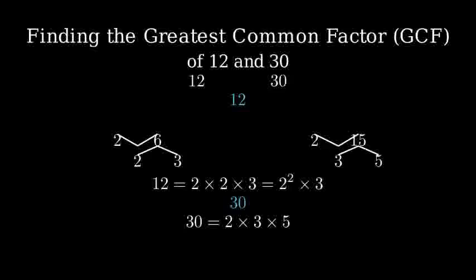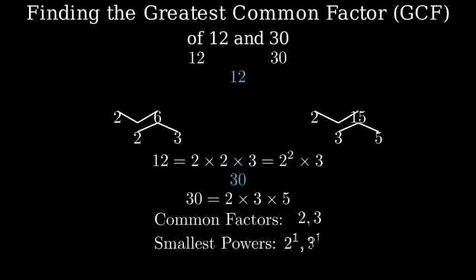Now, to find the greatest common factor, we need to look at the common prime factors between 12 and 30. Both numbers have a 2 and a 3 as factors. For the number 2, 12 has it twice, while 30 has it once. So, we'll use it once. For 3, both numbers have it once.